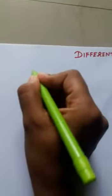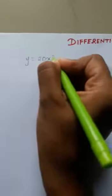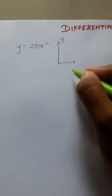I'm taking my equation y equals 20x squared, so I'll draw and explain. Let me mark the axis. This is my y-axis and this is x-axis, so y equals 20x squared.